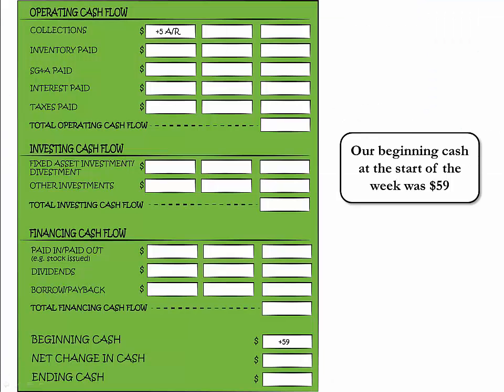This is the cash flow statement. It is divided into three sections: operating cash flow, investing cash flow, and financing cash flow. Based on the beginning balance sheet of Week 4, we can determine that the beginning cash at the start of the week was $59.